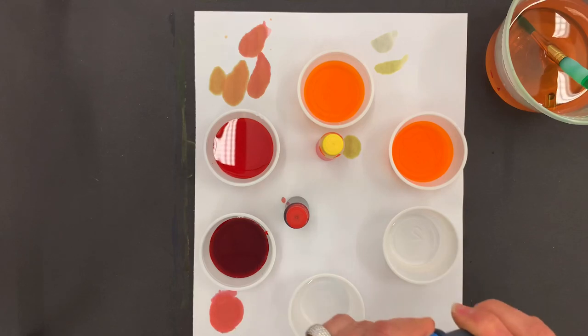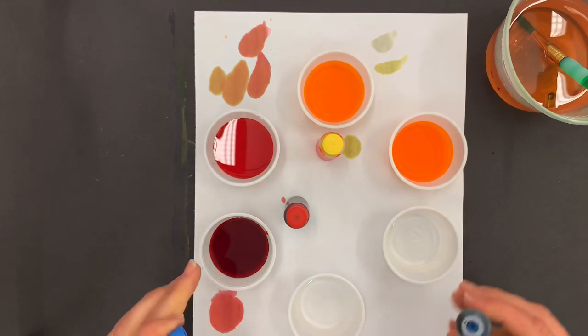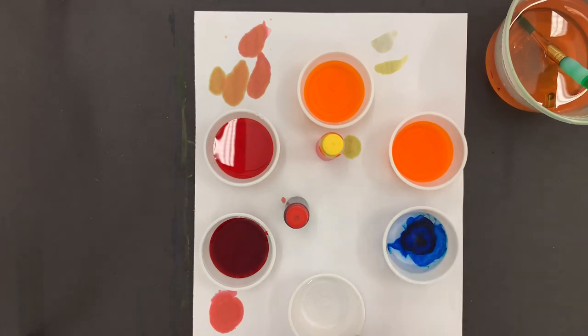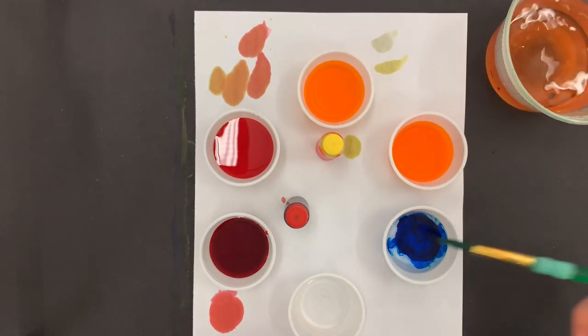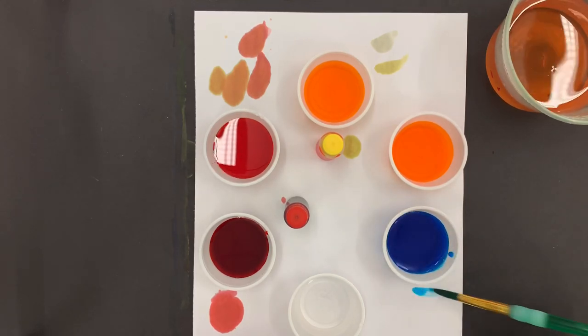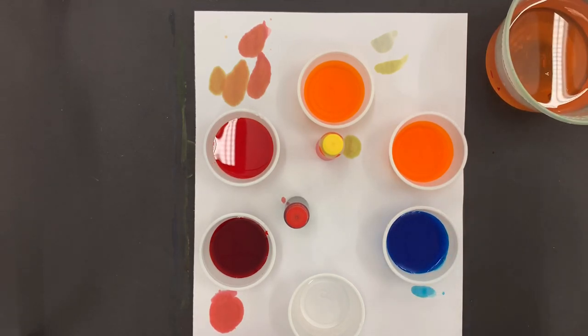And then I'm going to do the same thing with blue. Let's see, it took about three red to make a good blue, so I'm going to do about three blue. Whew, that looks strong, which is good. I want an intense color. Test it. Oh, that's beautiful.